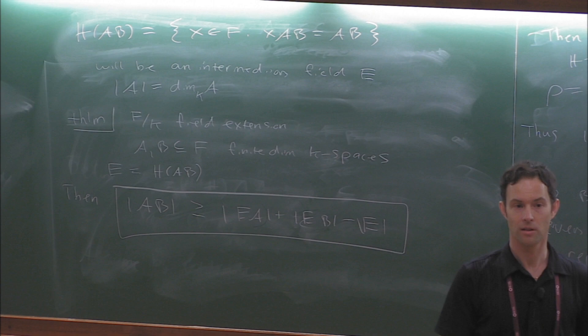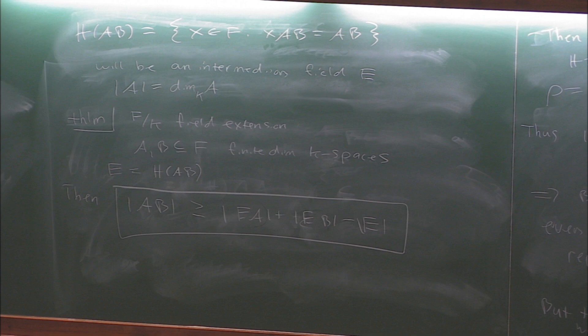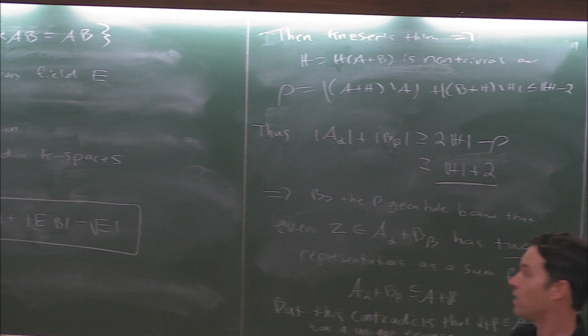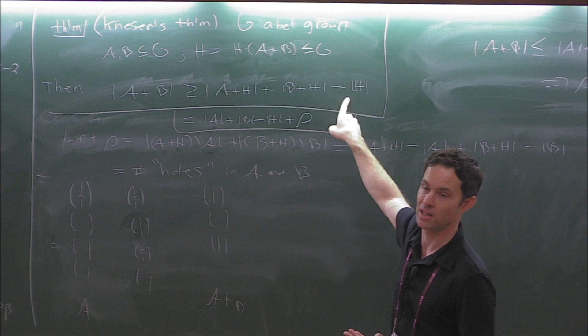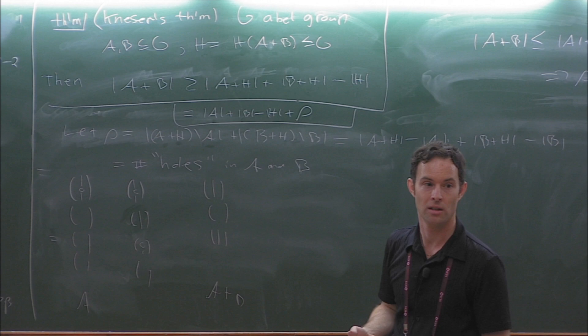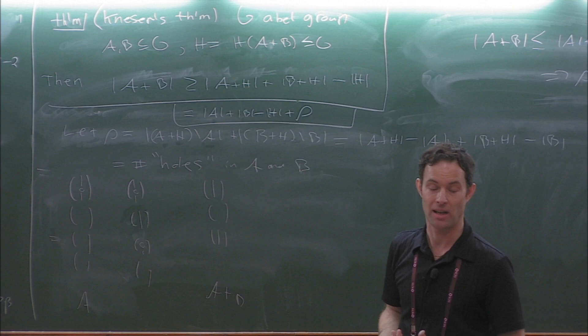We're just about at time, so I'll stop here. Next lecture, we're going to talk about inverse questions - focusing on this bound |A|+|B|-1, since Kneser's theorem tells us something about structure when we're below that bound. But it's only a weak approximation. Next time we'll see a precise description of what can actually happen in that subthreshold region where torsion and non-torsion-free behavior changes. Thank you.